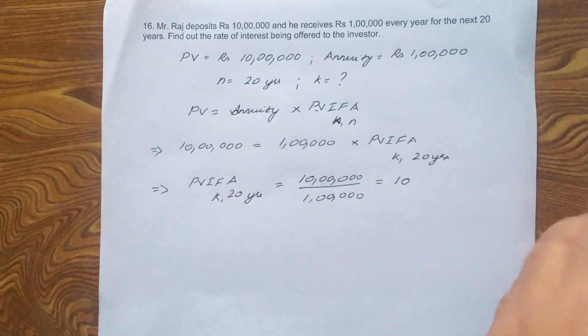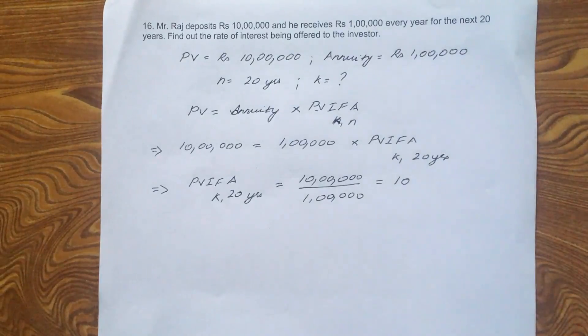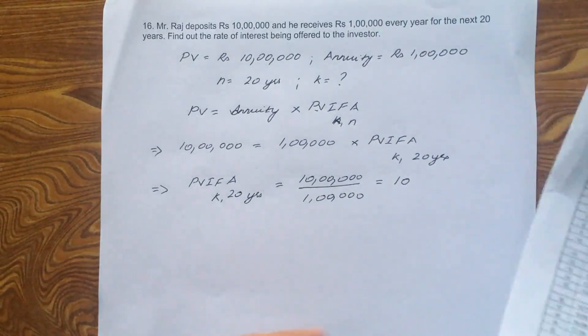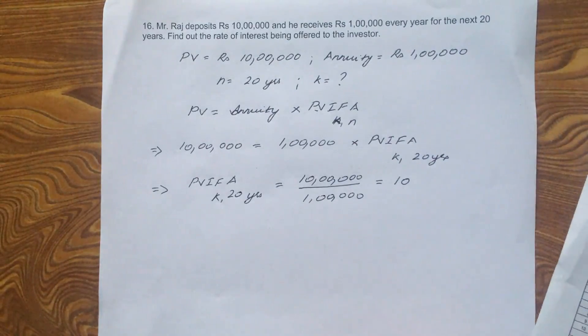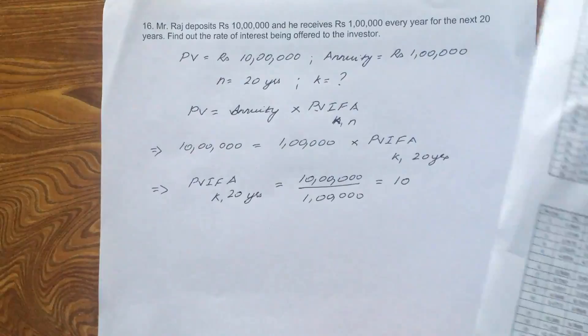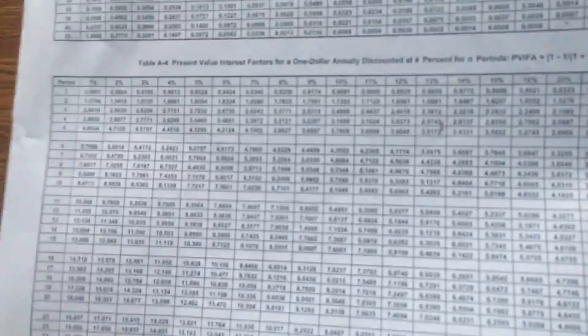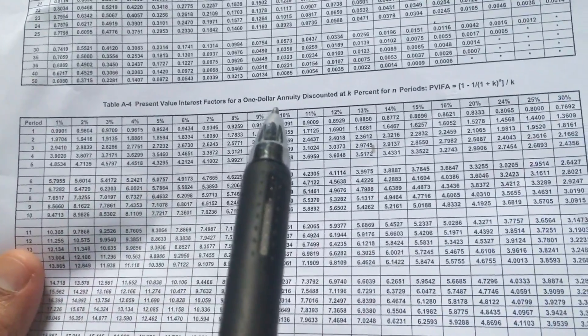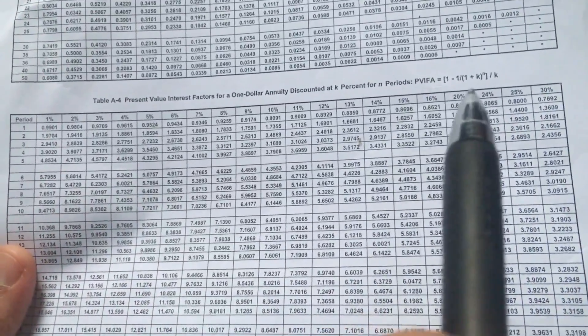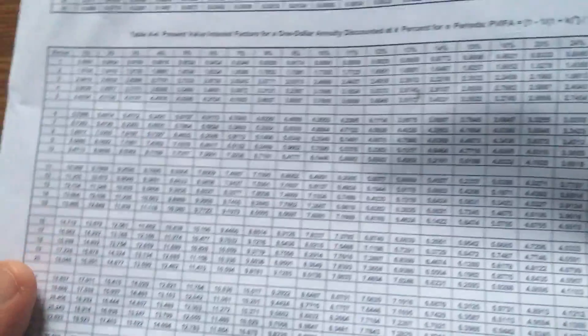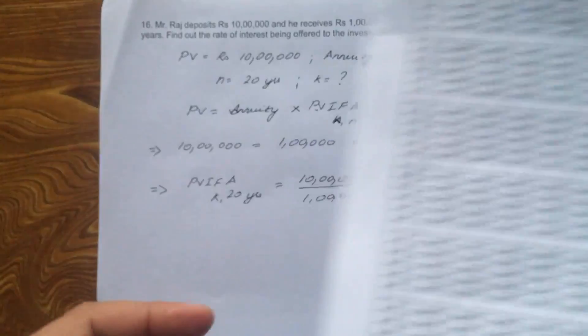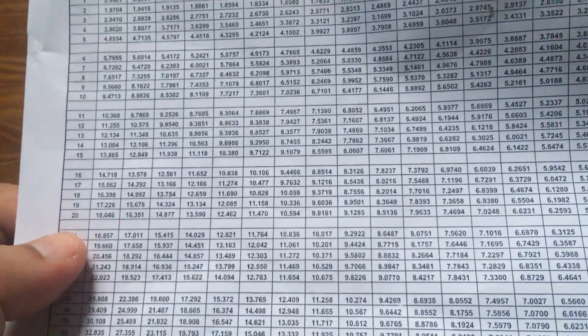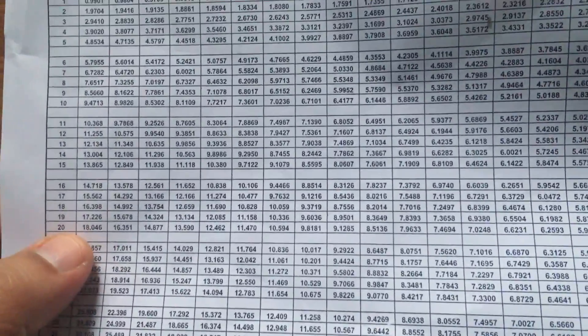Now, we need to find out the rate of interest that corresponds or that is close to the PVIFA K 10. Now, how do we find out? Again, you look at the table, the present value interest factor for a $1 annuity. So the PVIFA table. You go to the PVIFA table and look at the period. The period is what? 20 years, right? So look at 20 years.